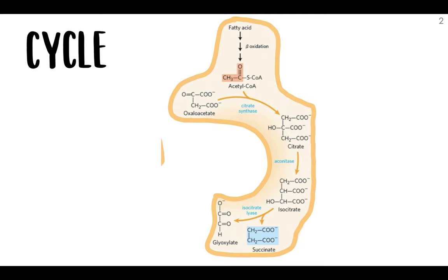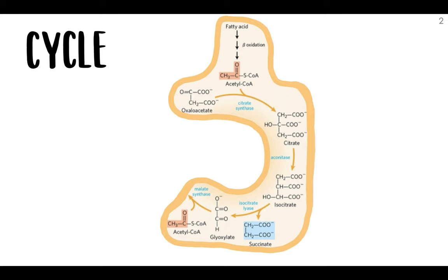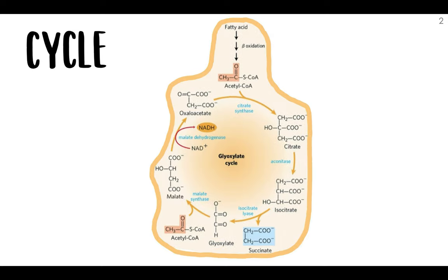And this glyoxylate condenses with another molecule of acetyl-CoA to yield malate. The enzyme responsible for this reaction is malate synthase, and this is another enzyme that you should remember because it's unique to this cycle. It's really easy to remember because it makes malate, so it synthesizes it—malate synthase, pretty simple.